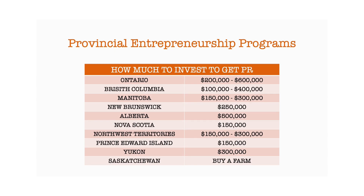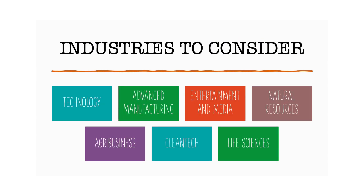If you look at this chart, it gives you a snapshot of how much investment amount is needed for each of these provinces. Like I mentioned in one of my earlier videos, these are just the minimum amounts, and just meeting these numbers is nearly not sufficient to receive an invitation to apply. Here is a list of a few industries that you can consider while making an investment. You can pause the video here to read this list yourself.